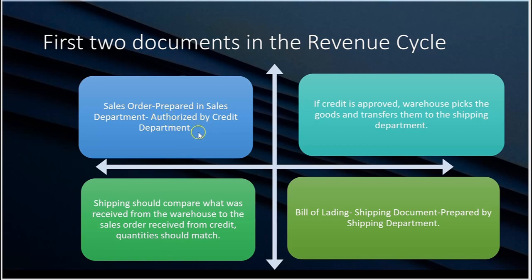Once the credit has been approved, the warehouse will pick the goods that were ordered and transfer them to the shipping department. What does shipping do — do they just send them out? Not yet. Shipping should compare what was received from the warehouse to the sales order form received from the credit department, and those quantities should match.